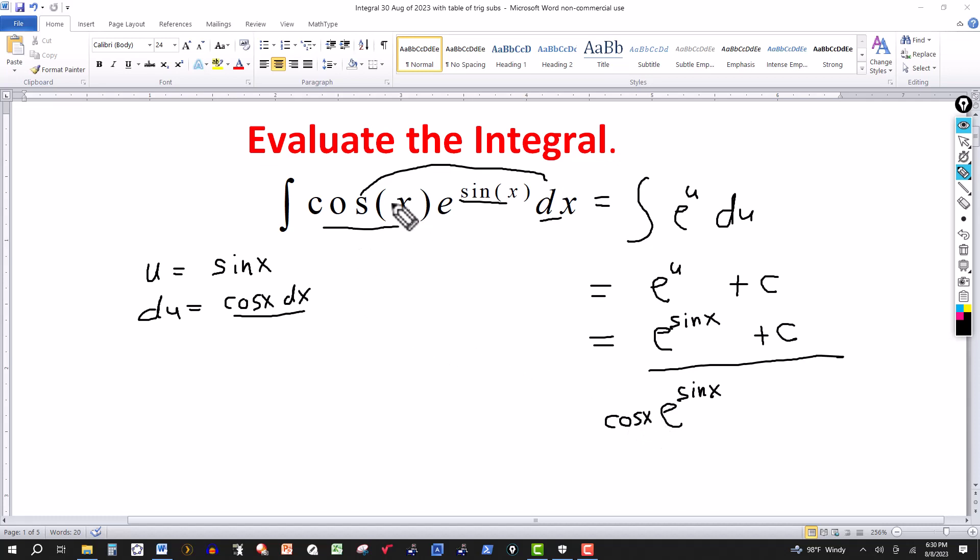And that again shows you the relationship between the chain rule for derivatives and the u substitution. That's your check right here. Final answer here is e to the sine of x plus a constant. Thanks for watching. We'll see you next time.